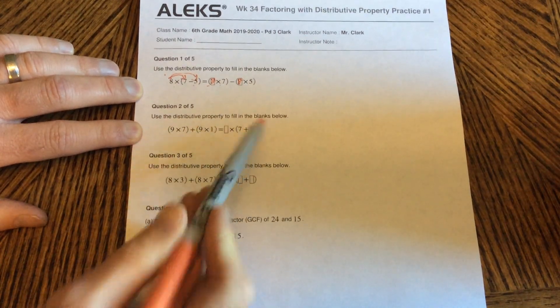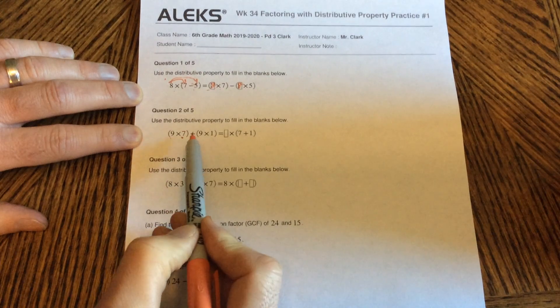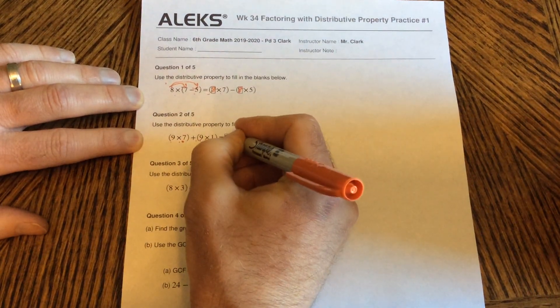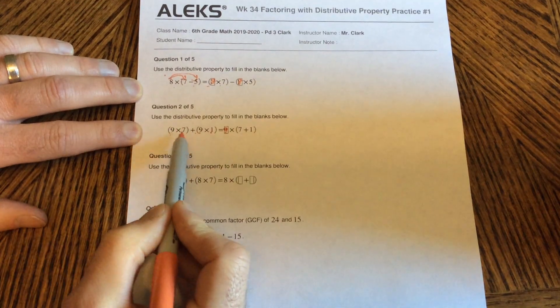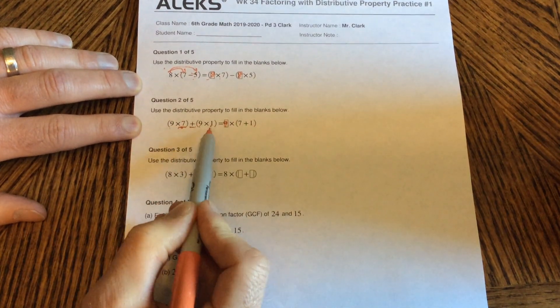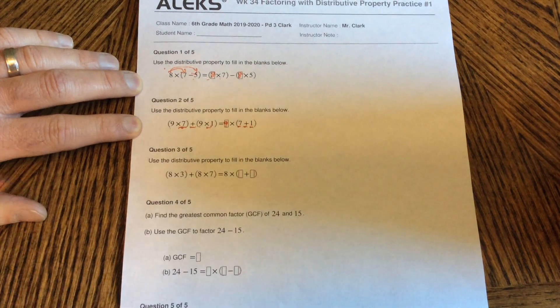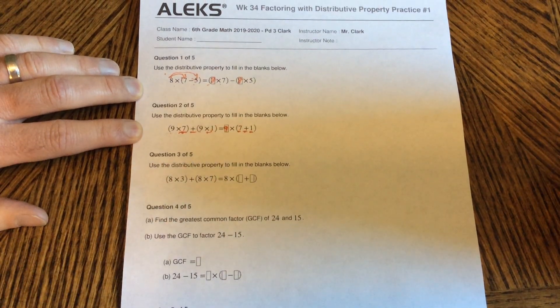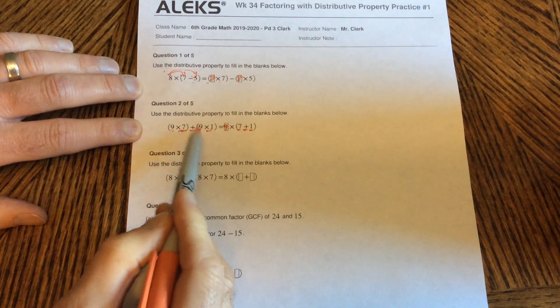Question 2. Use the distributive property to fill in the blanks below. 9 times 7 plus 9 times 1. So we're going to factor 9 to the outside and then we have 7 plus 1 in parentheses. We factored that 9 out because 9 was in both of them.